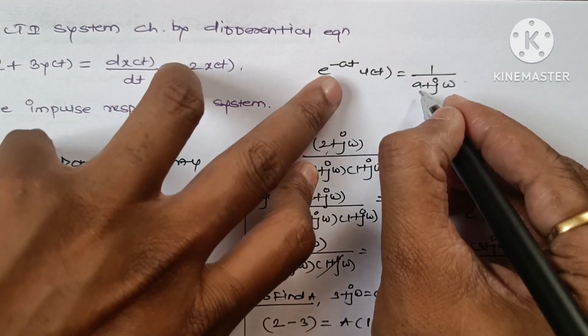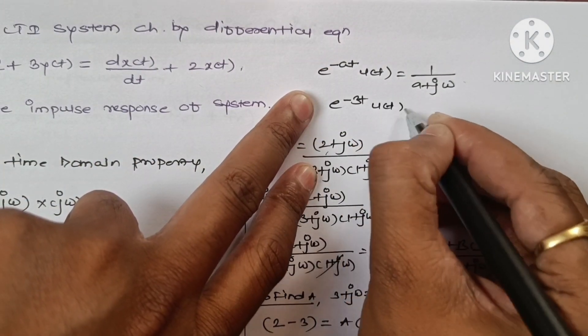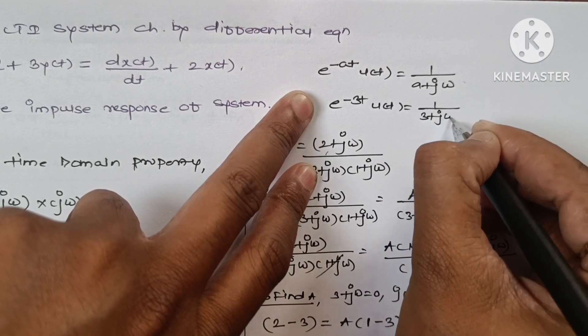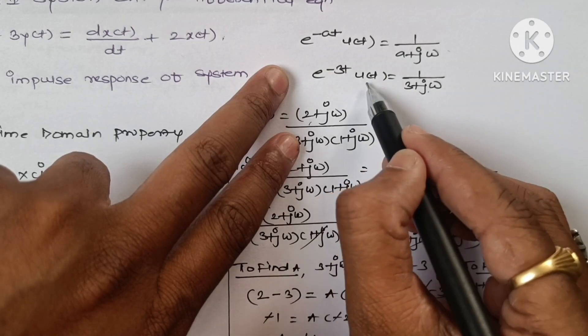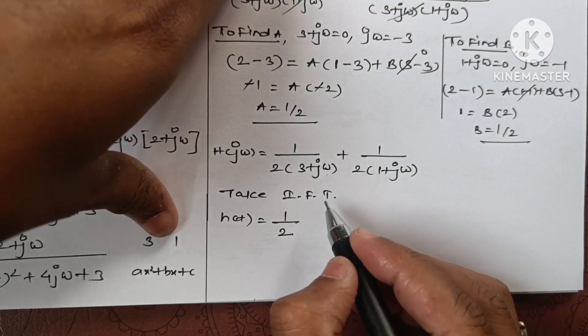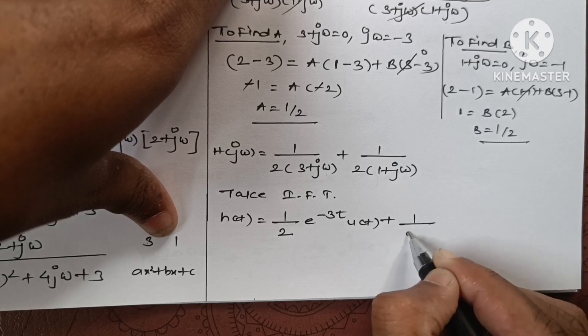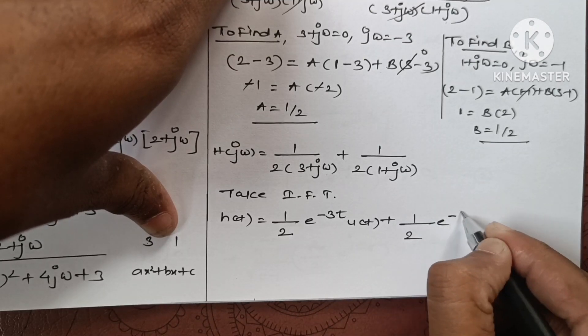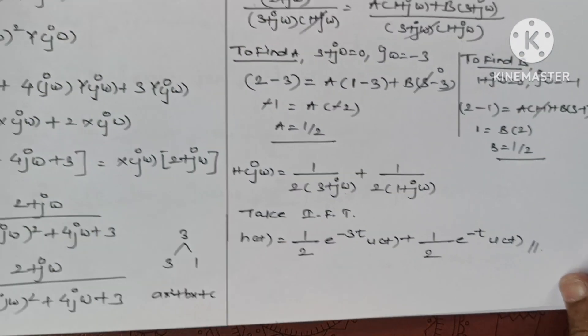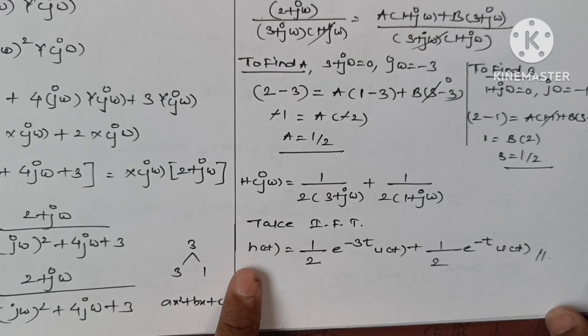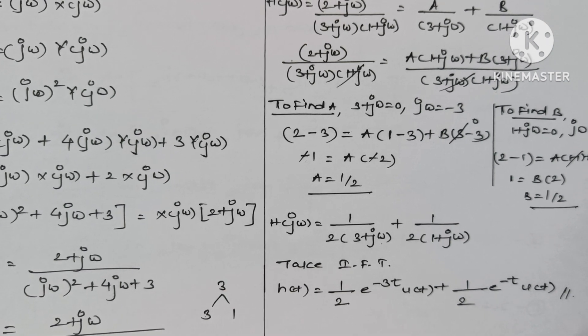If we have a = 3, then e^(-3t)u(t) has transform 1/(3 + jω). So the inverse gives h(t) = 1/2 e^(-3t)u(t) + 1/2 e^(-t)u(t).